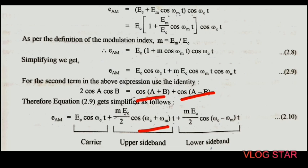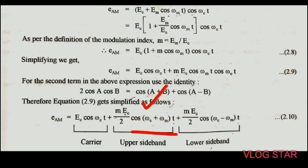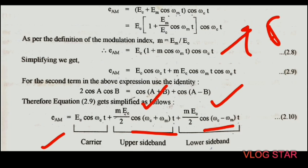The second term is (mE_c/2) cos((ω_c + ω_m)t) — this is the upper sideband, where the two frequency components are added. The third term is (mE_c/2) cos((ω_c − ω_m)t) — this is the lower sideband, where the frequency component is subtracted (ω_c − ω_m). The first term E_c cos(ω_c t) is the carrier signal. The frequency spectrum is a graph with frequency on the x-axis and amplitude on the y-axis.